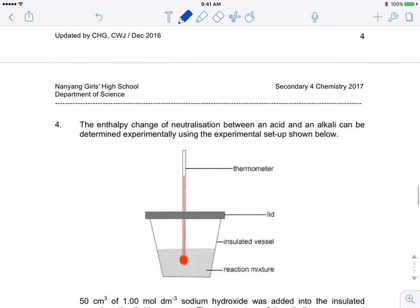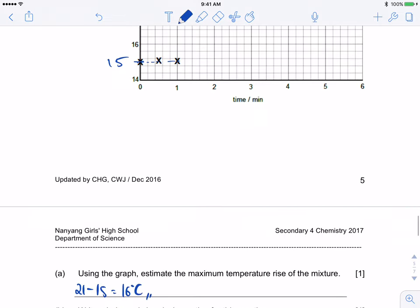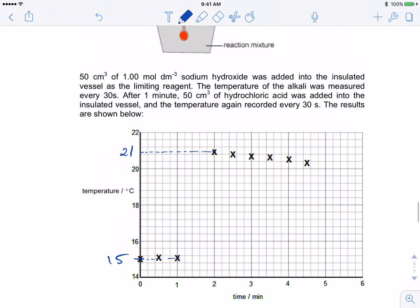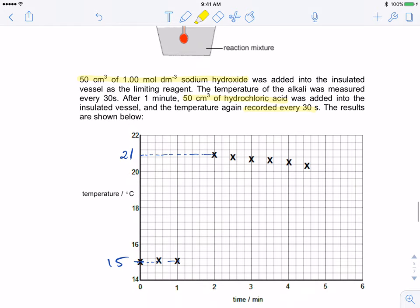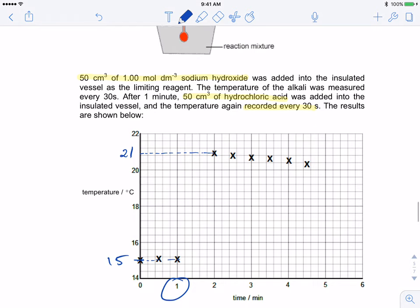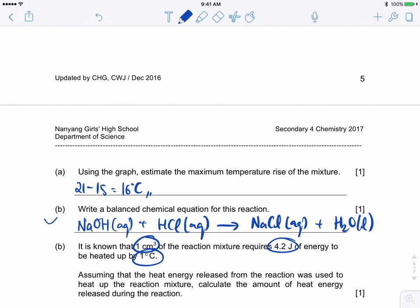Next, let's look at this graph. I have 50 cm³ of 1 molar sodium hydroxide added to the vessel. After one minute, I add HCl. Record it every 30 seconds. At this point, it's where we added in HCl. What is the reaction here? It is a neutralization reaction. I think everyone got this correct.